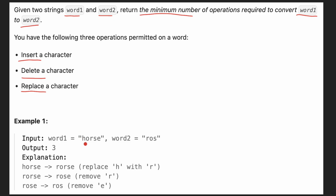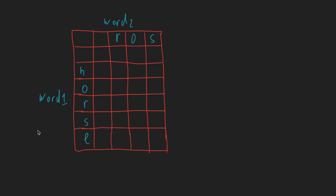For example, we are given 'horse' and the word is 'ross'. How many operations does it take to convert word one to word two? The explanation is: first we convert h to r, then we remove one r, and we remove e — so that's three operations, and we get 'ross' as a result.